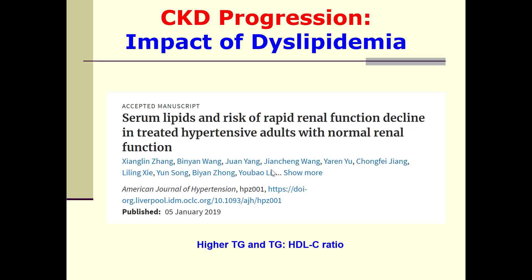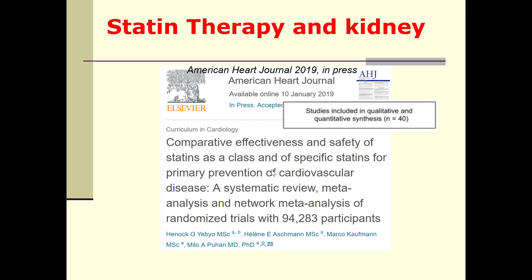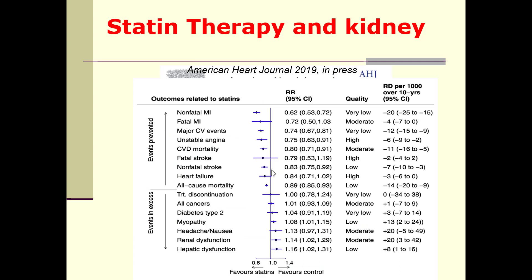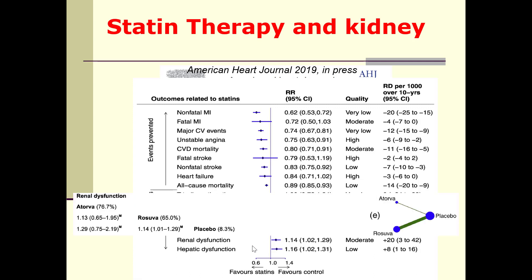Regarding dyslipidemia: higher triglycerides and higher triglyceride-to-HDL cholesterol ratio are both predictors of CKD progression. A network meta-analysis of randomized trials including 94,000 participants confirmed that statins are excellent for cardiovascular disease and mortality. However, regarding kidney outcomes, there is a higher percentage of renal dysfunction with statins versus no statins. Among statin types, atorvastatin is safer than rosuvastatin regarding kidney outcomes.